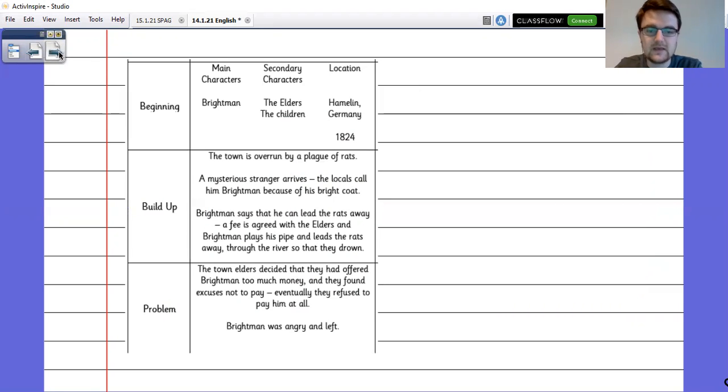So here is our initial plan for the story of the Pied Piper of Hamelin and normally you guys would get this plan to have a look at and we'd make it together but it's slightly different for this. So for the beginning we've got our introduction to Brightman to the secondary characters so the elders and the children are the main other characters that get spoken about. Our location including the year as well and in the build-up we find out about the problem.